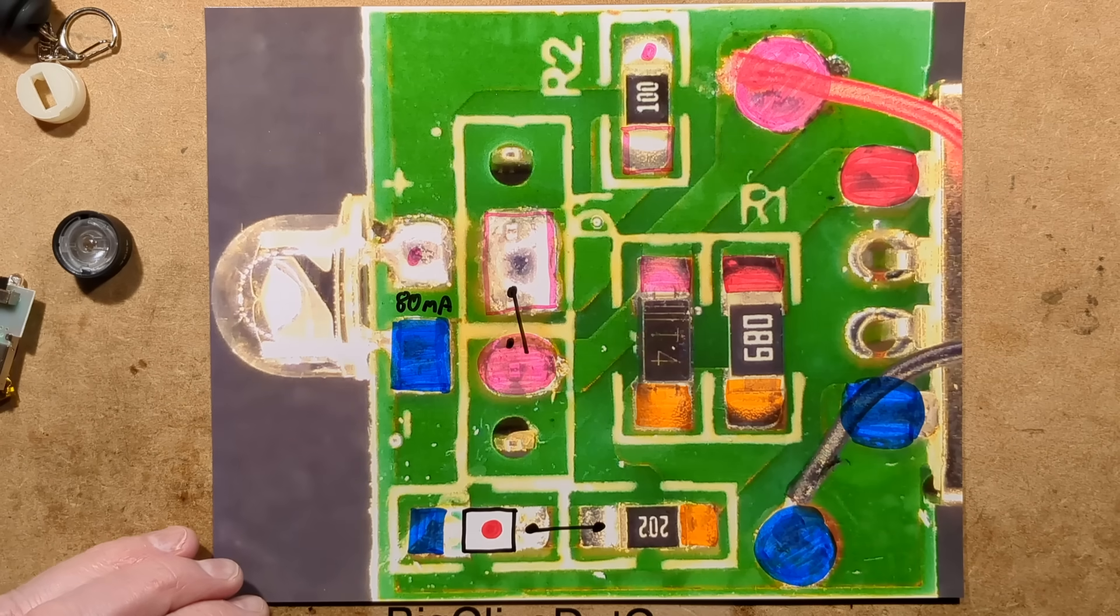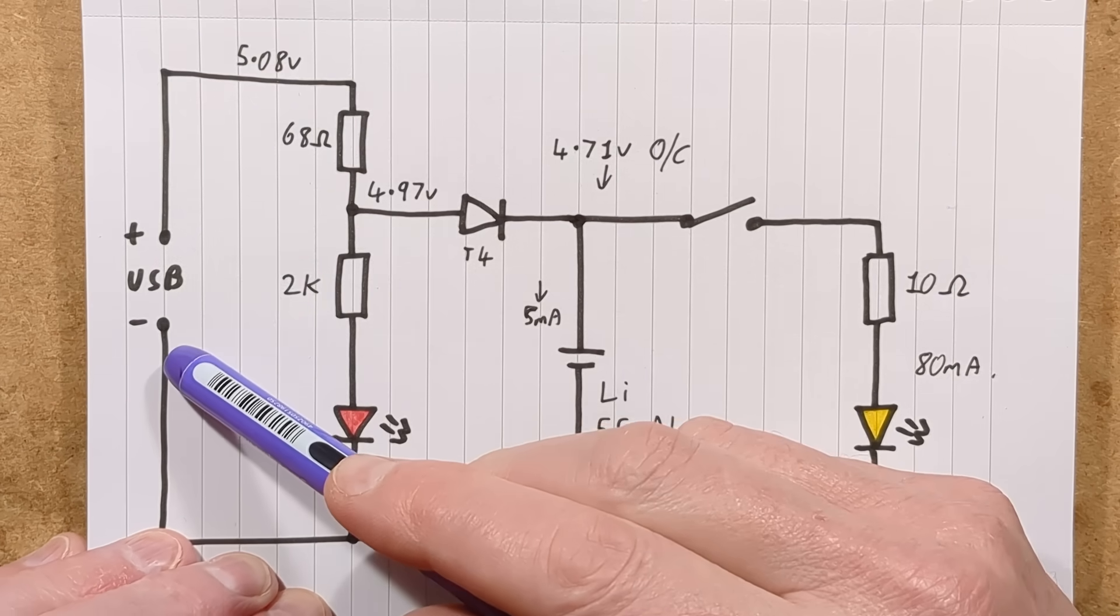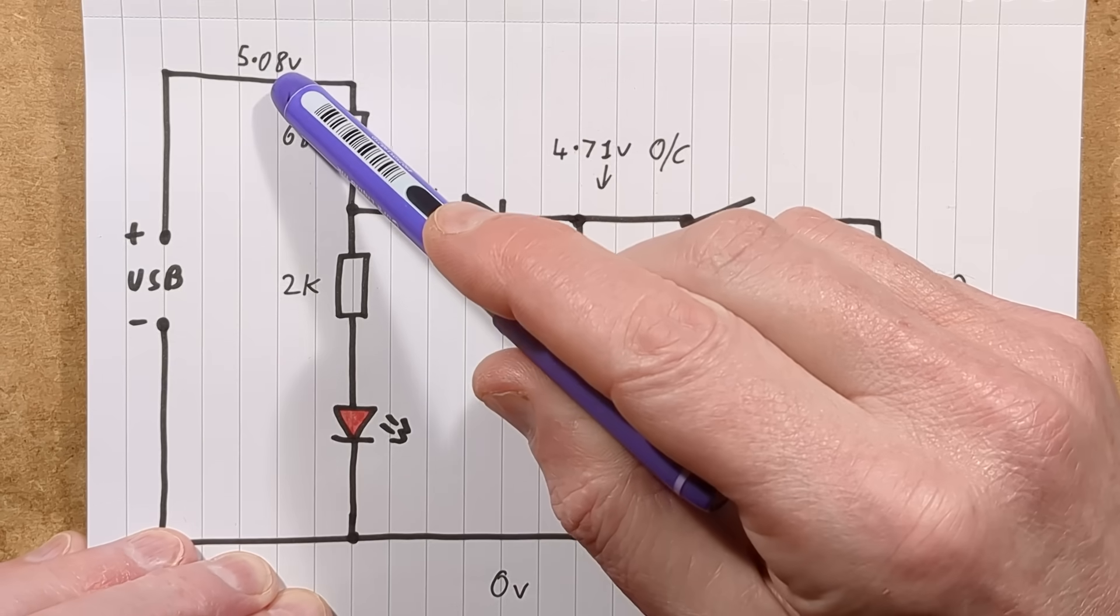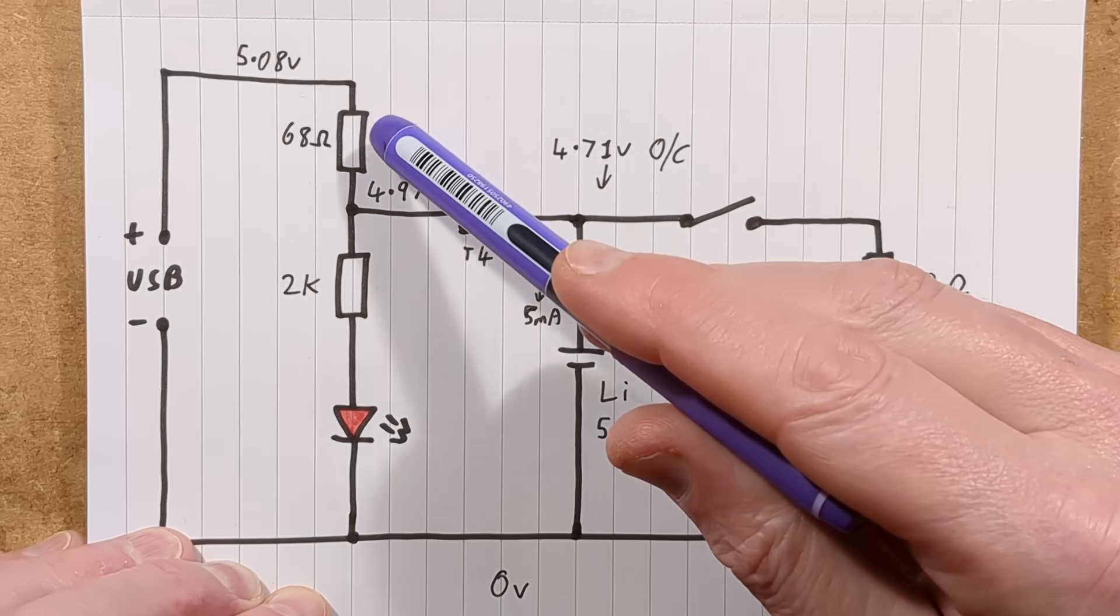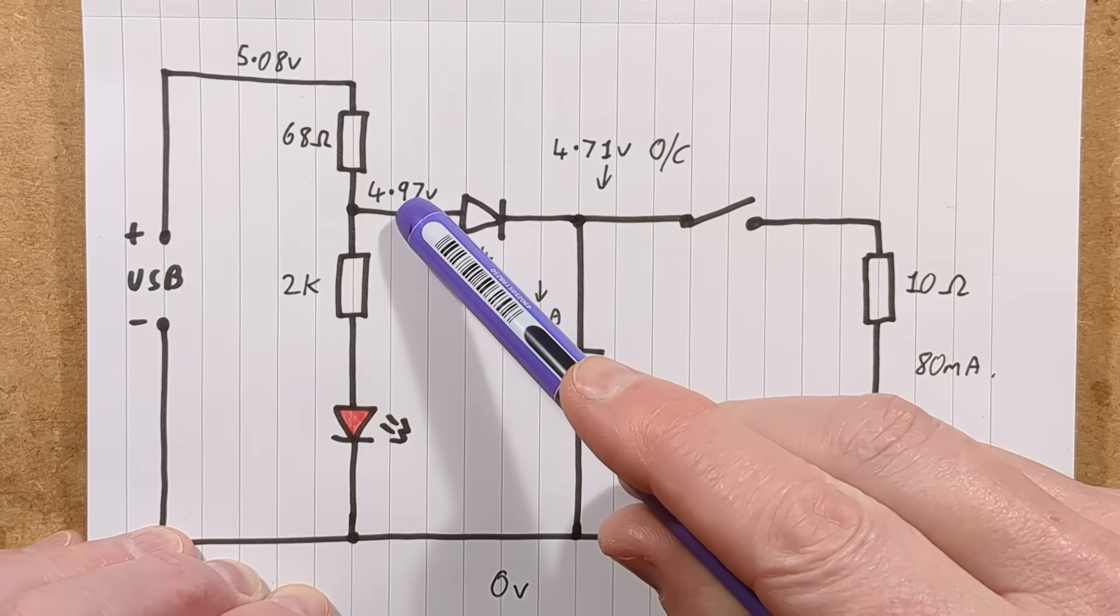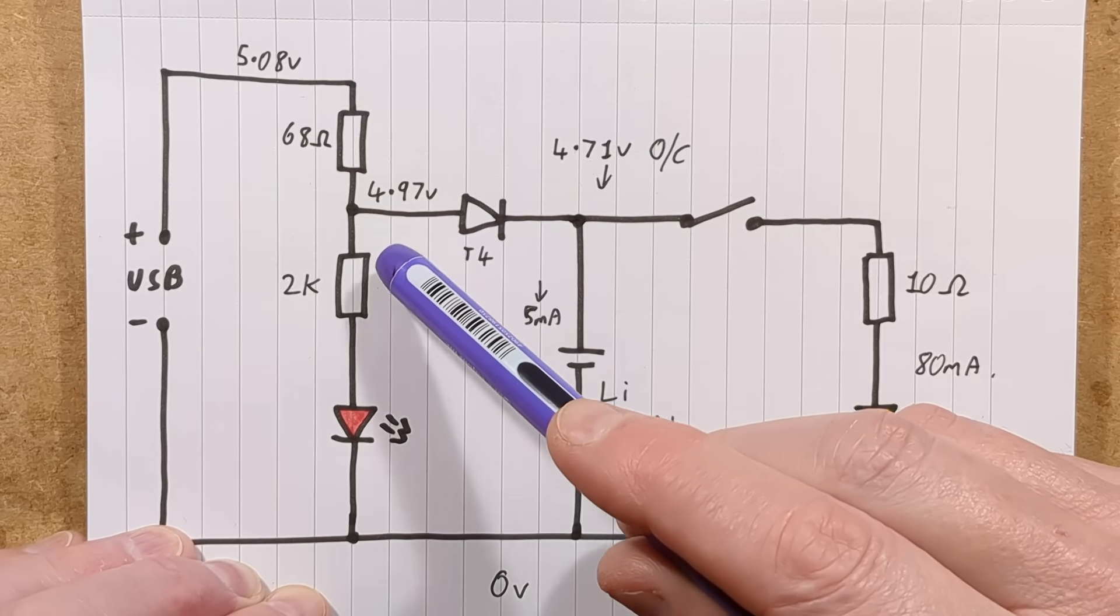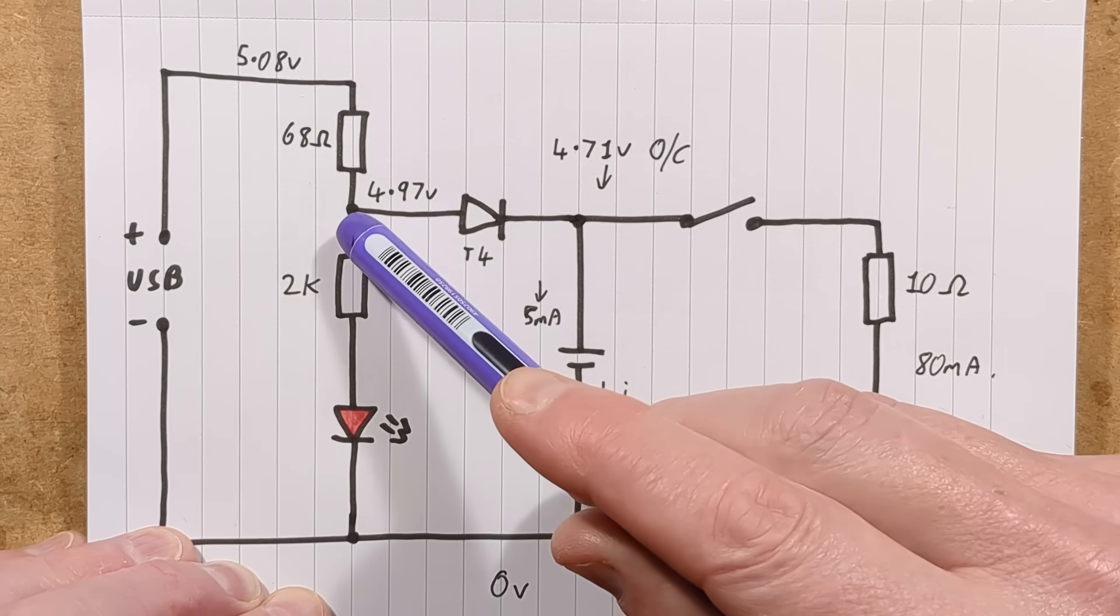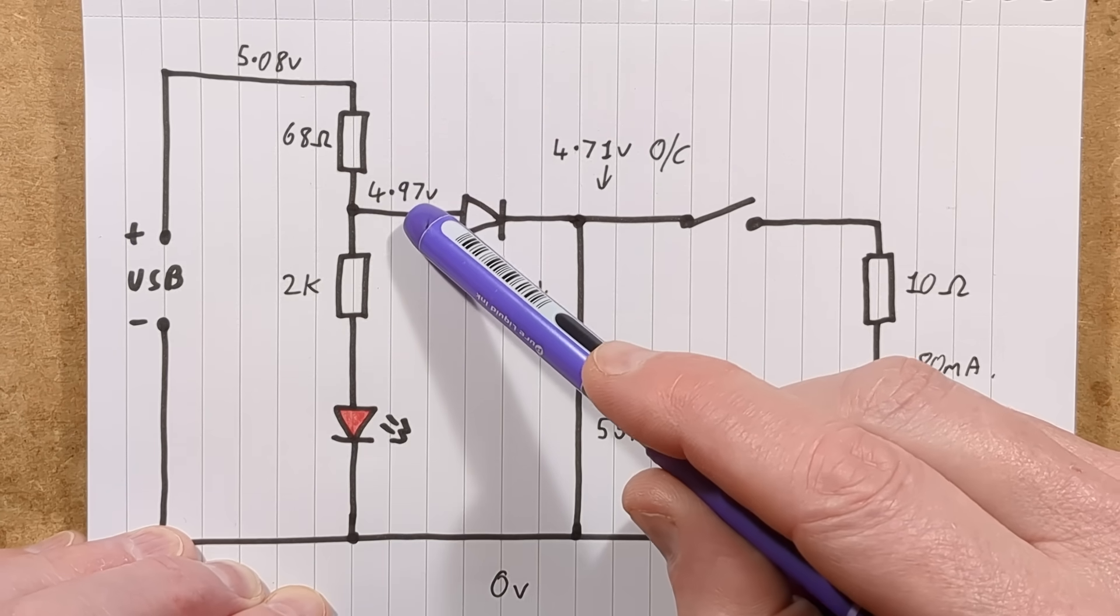Let me show you the schematic. On the schematic, we have the USB charge port, and during tests, I measured 5.08 volts from the power bank. And that goes via what I thought was going to be a potential divider to give a more realistic charging voltage here. But in reality, it's got this main current limiting resistor, then the 2K resistor for the red LED, and the voltage here is 4.97 volts.